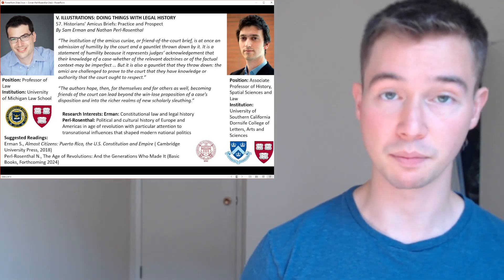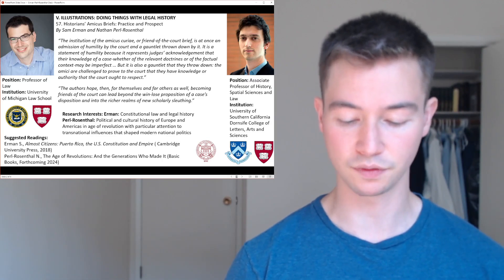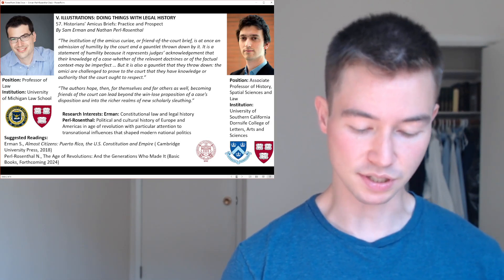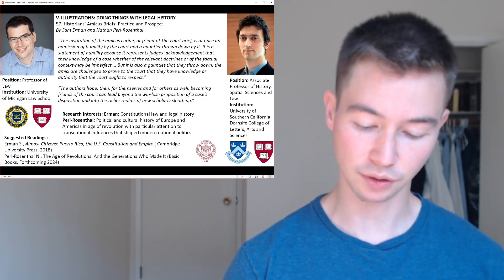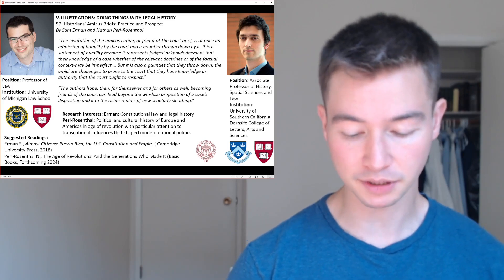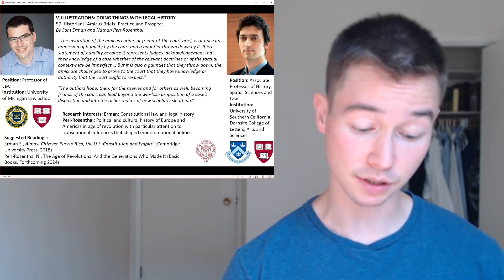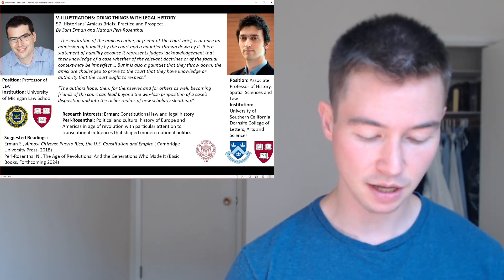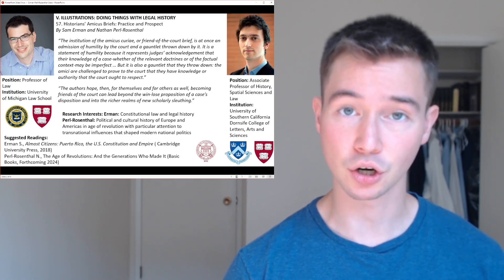He graduated from Harvard with a Bachelor of Arts, or an AB as they call it at Harvard, in 2004. His second book project was The Age of Revolution, a Cultural History, circa 1760 to 1820, and his other essays and reviews appeared in a number of journals, including the William and Mary Quarterly, the American Historical Review, and the Journal of the Early Republic.